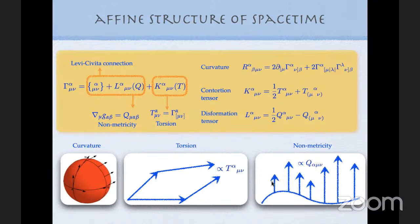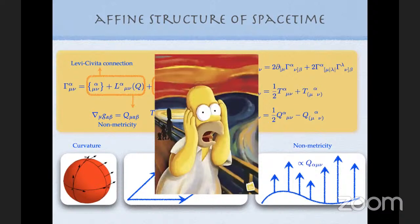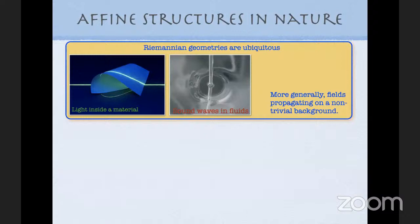Curvature measures the angle between a vector that is parallel transported along a closed curve. Torsion measures the property of space-time that parallelograms do not close — if you transport a vector in two different orders around a loop and they don't close, it's because you have torsion. Non-metricity has to do with the variation of the length of vectors as you move around space-time; the angles between vectors can also vary.